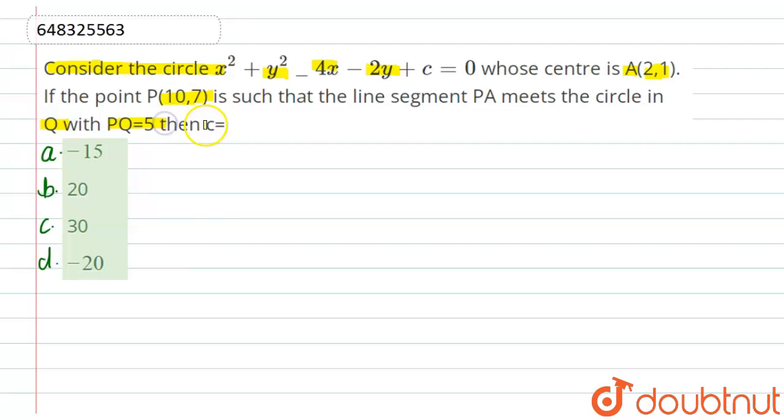If this is equal to 5, then we have to find the value of the constant C, which we have indicated here in the equation of the circle. So let us see the solution here. Let us understand this question by proper diagram.